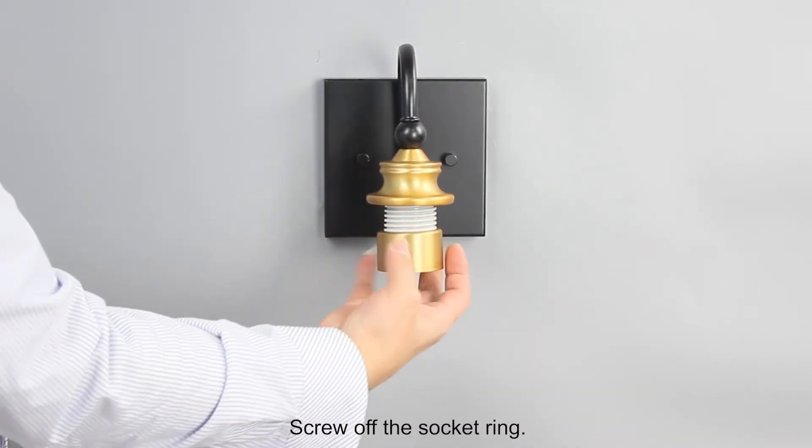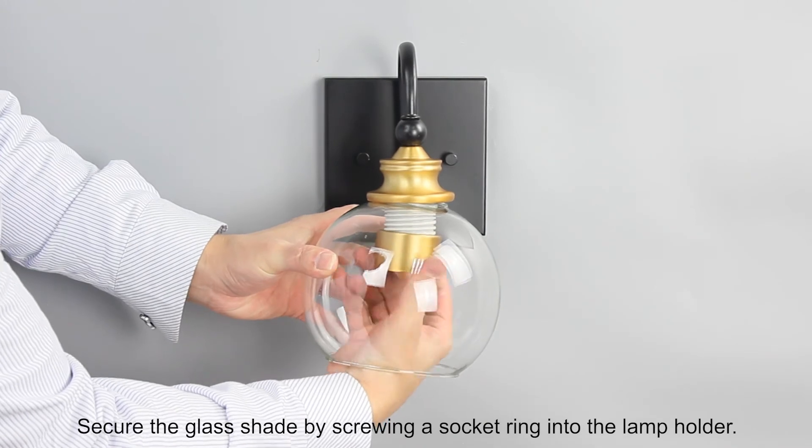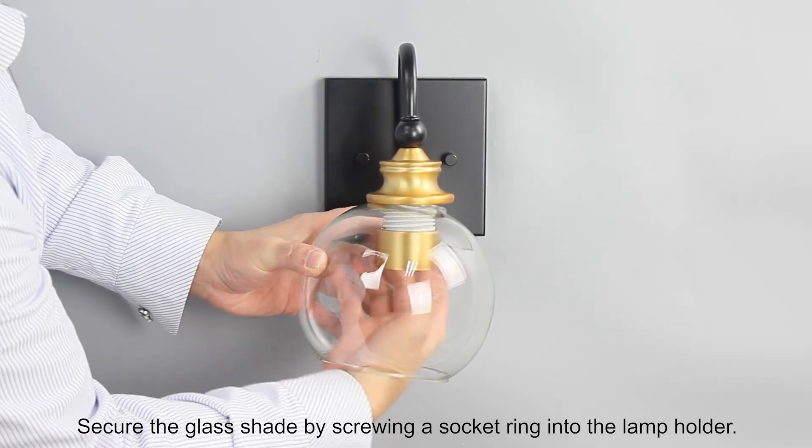Screw off the socket ring. Put the glass shade around the lamp holder. Secure the glass shade by screwing the socket ring into the lamp holder.